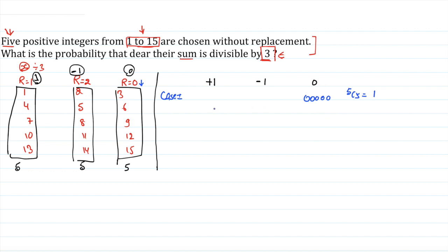In Case 2, we take 3 zeros plus one number from the +1 category and one from the −1 category. The count becomes 5C3 × 5C1 × 5C1, that is 10 × 5 × 5 = 250.